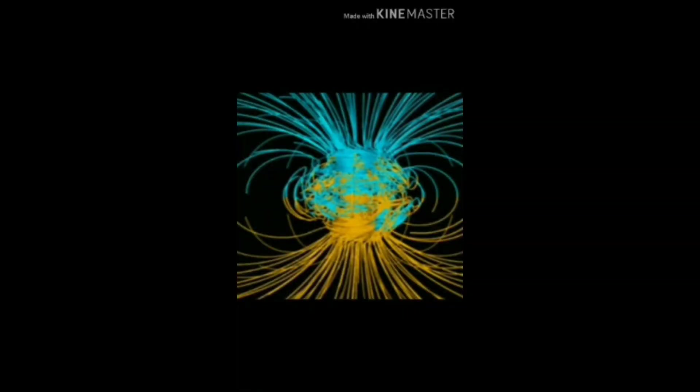This is a computer simulation of Earth's field in a period of normal polarity. The lines represent the magnetic field. The blue lines indicate the field which points towards the center and yellow outward. The rotation axis of the Earth is centered and vertical. Thank you.